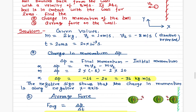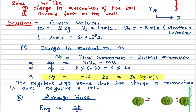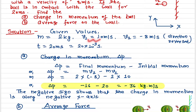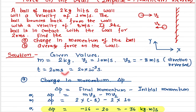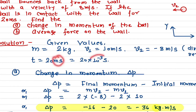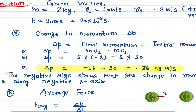The given mass of the ball is 2 kilograms. V1 is the velocity with which the ball is approaching the wall, and V2 is the velocity when the ball bounces back — it carries a negative sign because the ball was initially moving in the positive direction, so anything moving in the opposite direction after bouncing back has a negative sign. The time of contact is 20 milliseconds, which converts to 20 times 10 to the negative 3 seconds.